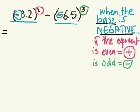So we have negative 3.2 to the power of 2. Negative base, even exponent, what will the result be? Positive, what's 3.2 times 3.2? 10.24, good.